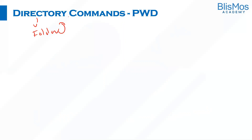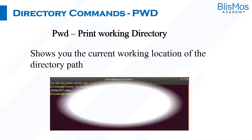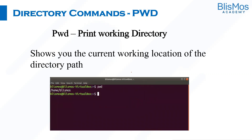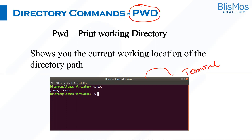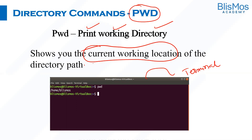First and foremost, I said we can work on the commands. How do you open a terminal? We can open a terminal like this. I will show you how to open a terminal when we start the hands-on. Let us start with the commands. First command is PWD. What is PWD? It is print working directory. What exactly is a print working directory? It shows the current working location of the directory path.